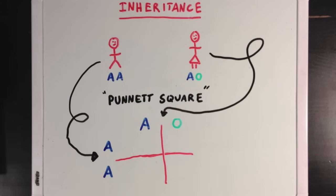In this case, two of our boxes will have the AA in them, and two will have AO in them. So that means that half of the children will have the genotype AA, and half of the children will have genotype AO. But since both of these genotypes code for the same phenotype, all of the children will have the blood type A phenotype.